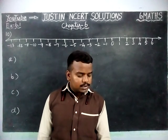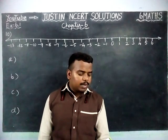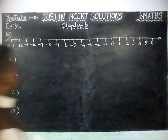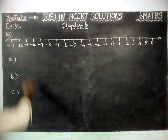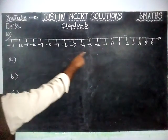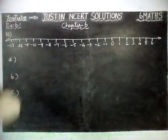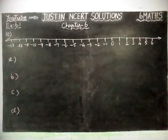The question is: draw a number line and answer the following. They have given 4 questions. They have drawn a number line from 6 to minus 13. Now we are going to answer the questions one by one.